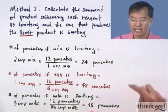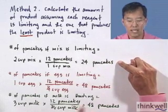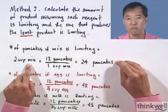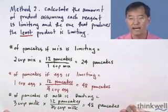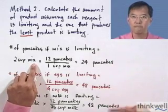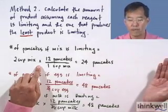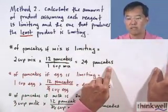The calculation is exactly the same. Now we focus on the one where we can make the fewest number of pancakes, which in this case is the first calculation. That means pancake mix is the limiting reagent. We have to come up with the same answer regardless of whether we use Method 1 or Method 2. The nice thing about Method 2 is you directly determine the number of pancakes you make, and that is what you call the theoretical yield — how much you should be able to make based on your ingredients.